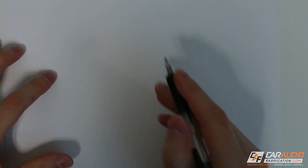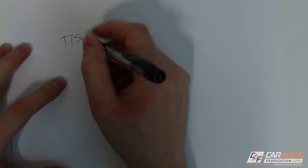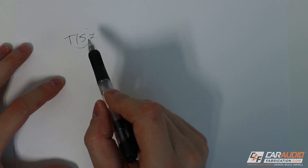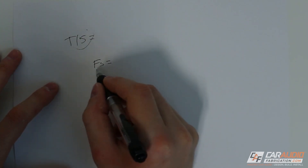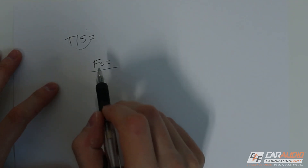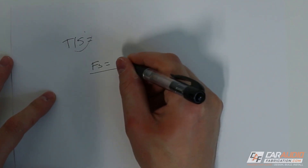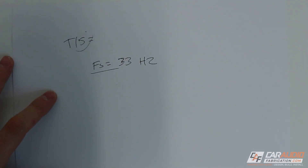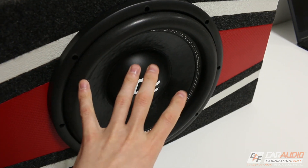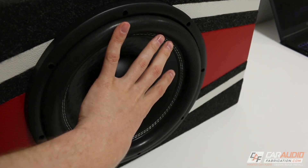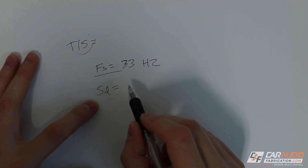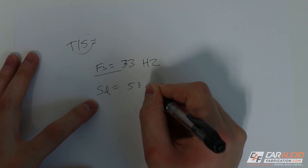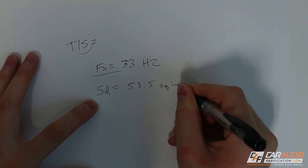Let's start with talking about some of the values we're going to need about our subwoofer. There are a few different TS, or Thiele-Small, parameters that we need to get from the subwoofer. The first parameter is the FS, which is the subwoofer's free air resonant frequency — we'll use 33 Hz as our real-world example. Next, we need the SD, which is the effective cone area of the subwoofer, a value the manufacturer will provide. In this case, it's 53.5 square inches.